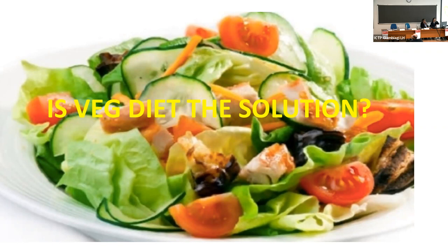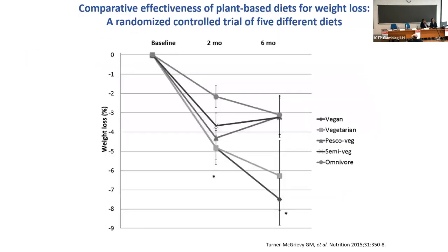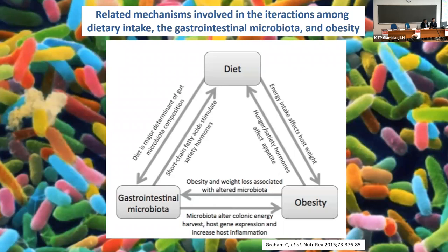A study comparing vegan, vegetarian, pesco-vegetarian, semi-vegetarian, and omnivore diets in overweight or obese people demonstrated that vegan and vegetarian individuals lost the most weight compared to the others. Therefore, a plant-based diet appears better for weight loss. One reason is that low-fat, high-fiber diets affect the gastrointestinal microbiota, and there is an association between the gastrointestinal microbiota and obesity.